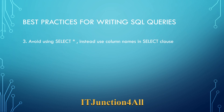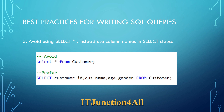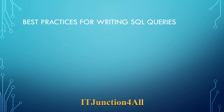The third point: avoid using SELECT * — instead, use specific column names in the SELECT clause. You can see the avoid query and the prefer query. If a table contains a lot of columns and millions of rows, SELECT * will surely slow down query performance. You should always query only the necessary columns, as shown in the prefer query.